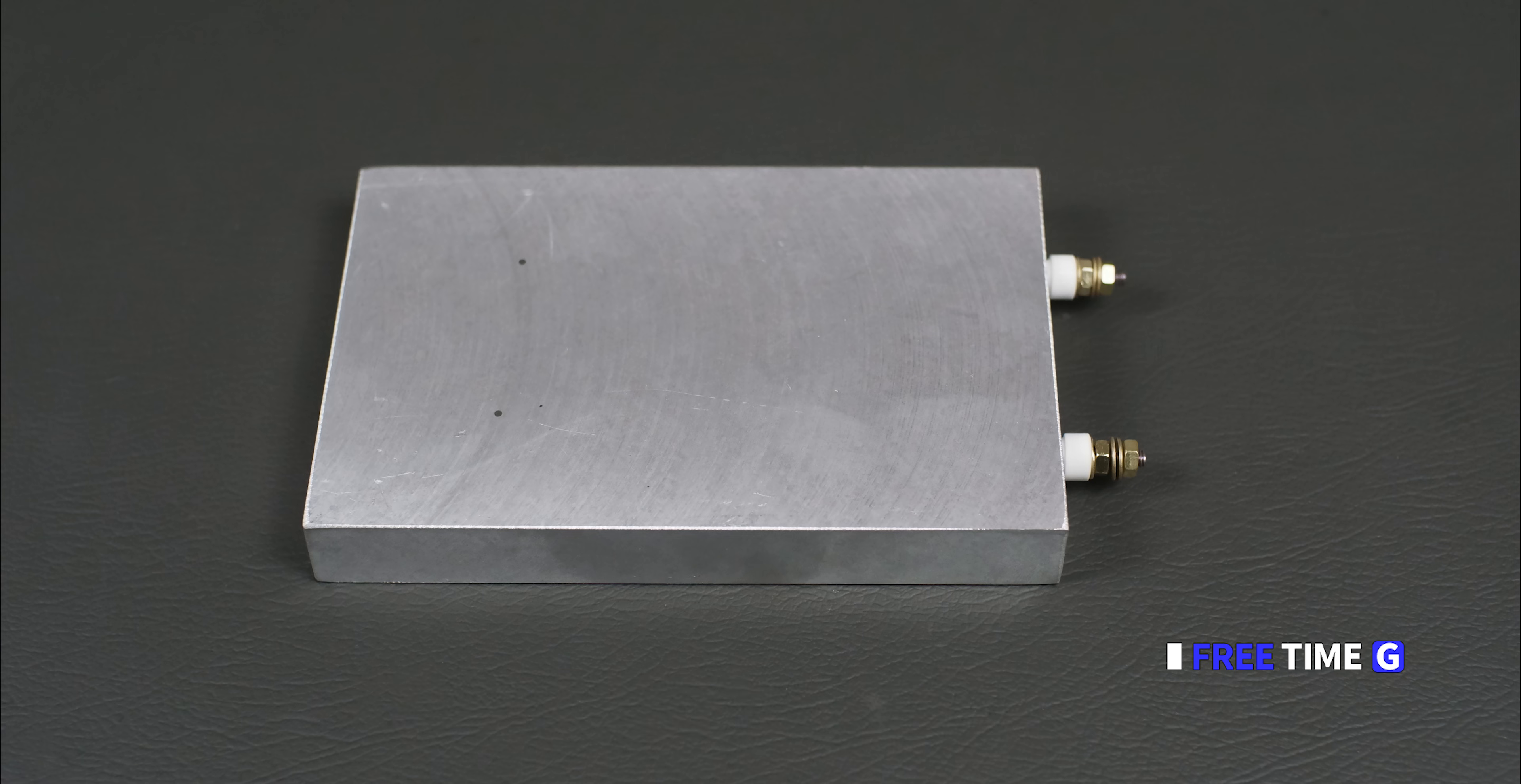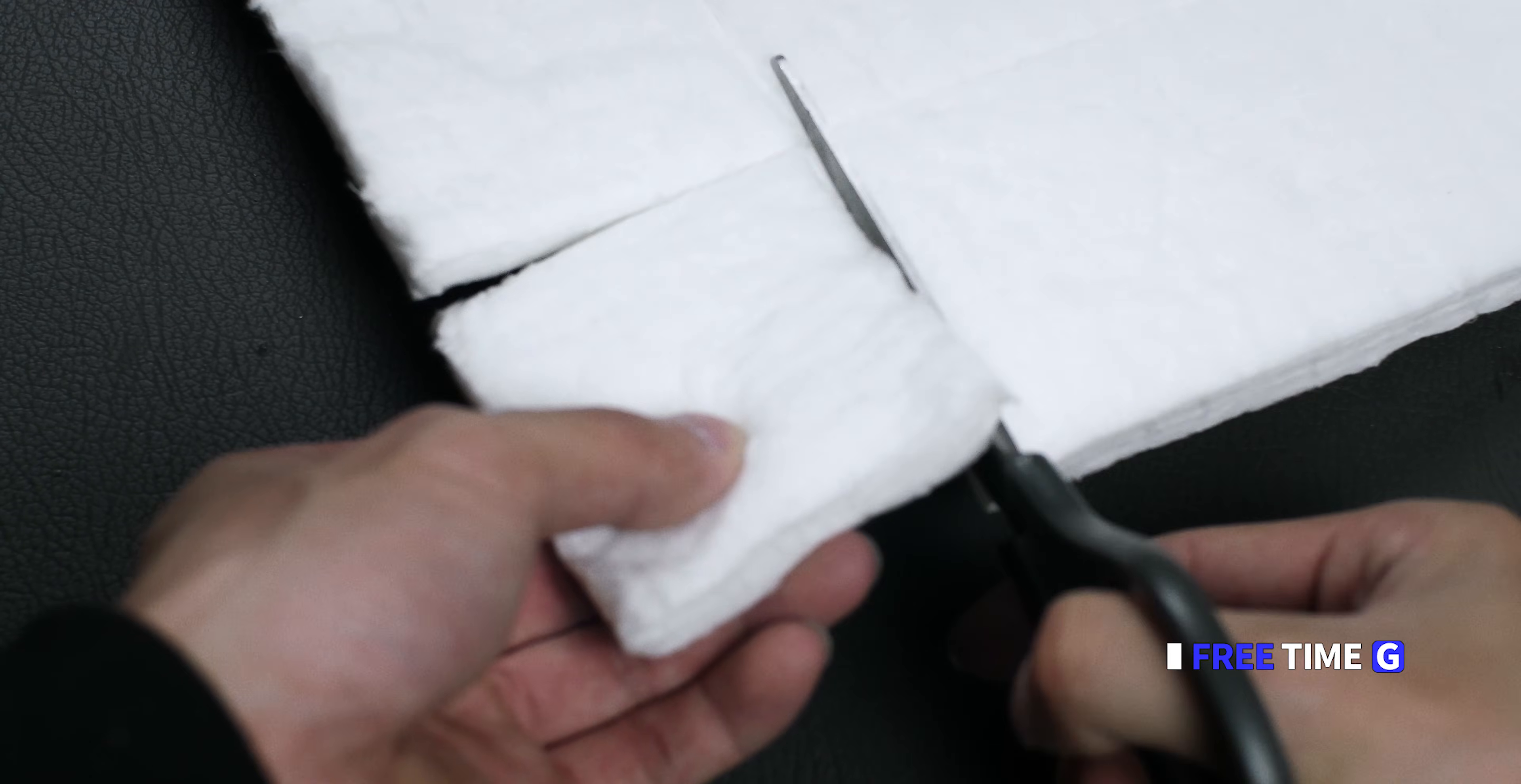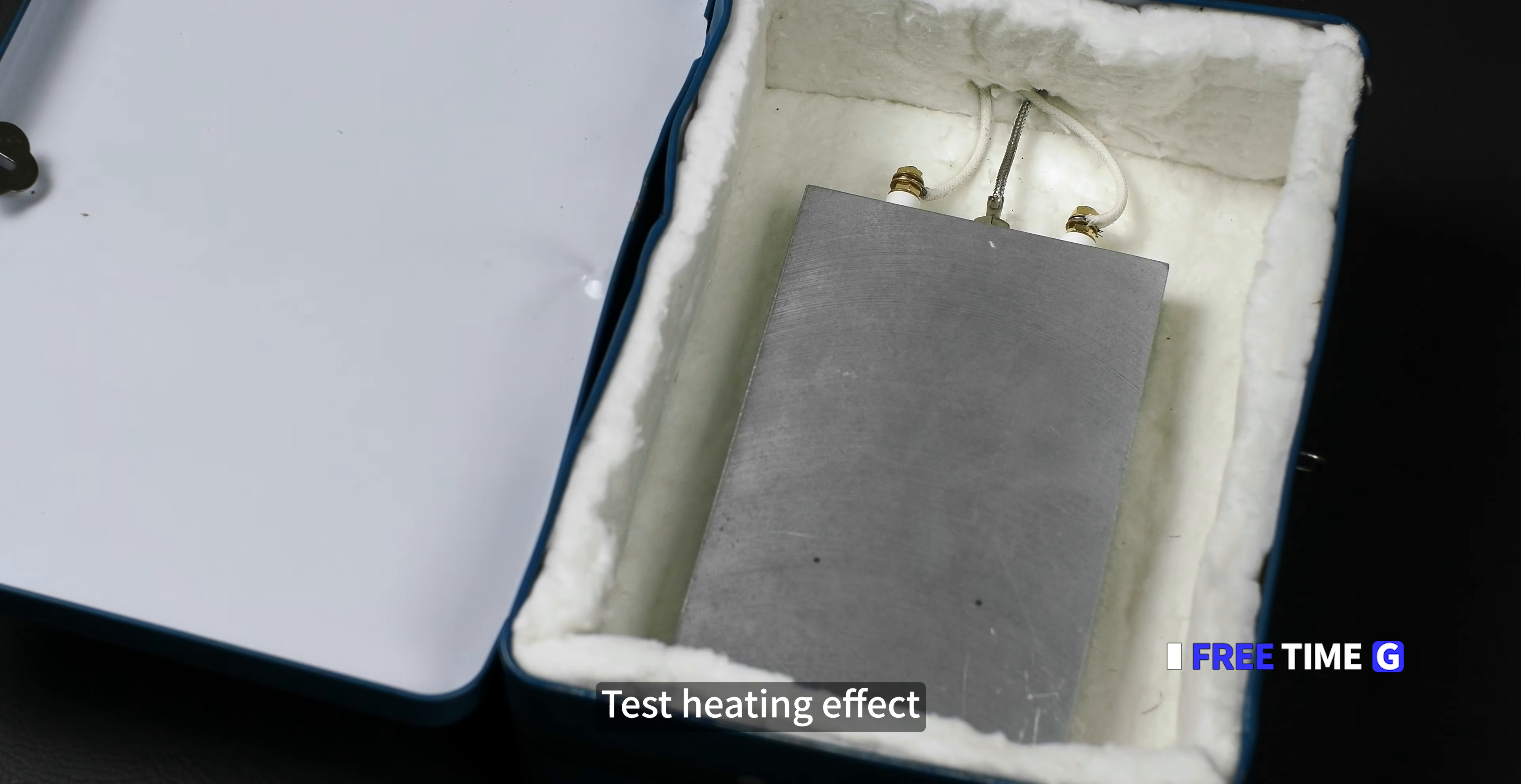First, you need an aluminum heating plate. On the thermostat, choose and use metal storage box. Drill the required holes. Measure the sides. Cut out the right insulation cotton. Test heating effect.